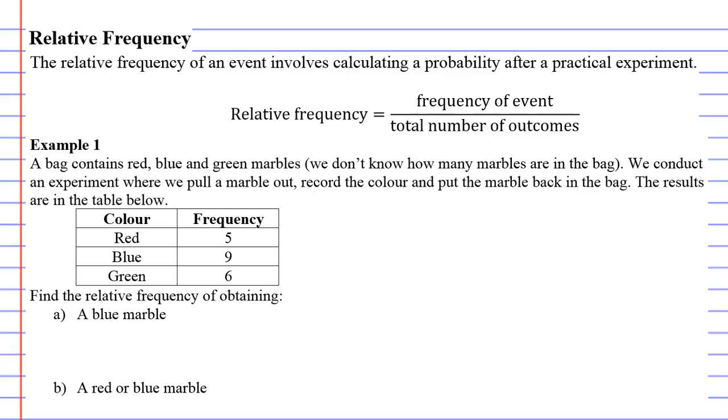Relative frequency. Now relative frequency involves calculating a probability for a practical experiment. So it's actually like a physical hands-on experiment that has been performed. And the formula for calculating the probability is relative frequency equals frequency of event over the total number of outcomes. Now this is basically the same as the probability formula we learned earlier. The only difference being that it's applied in a practical experiment.